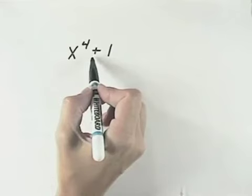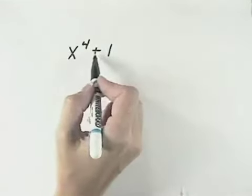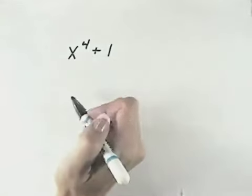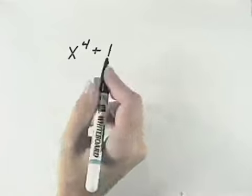But because it's addition, it can also not be the difference of squares. Even though they're perfect squares, difference means subtraction, which we don't have. Since none of our methods for factoring a polynomial with two terms will work,